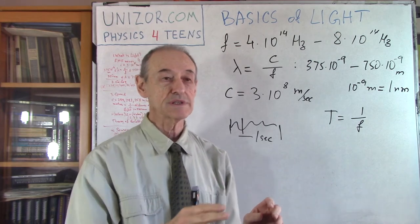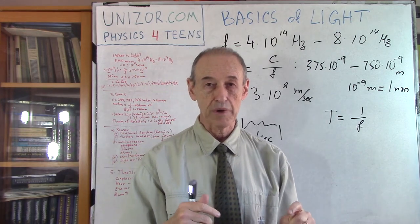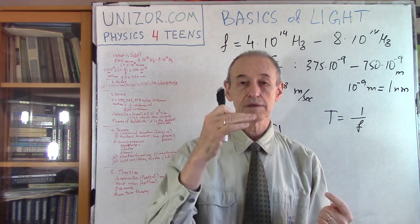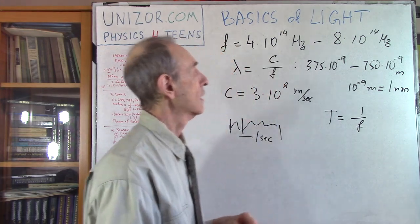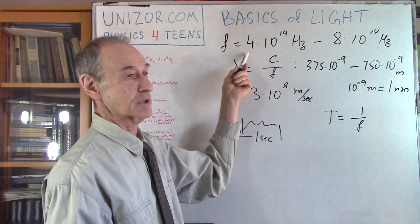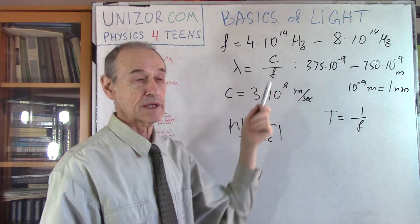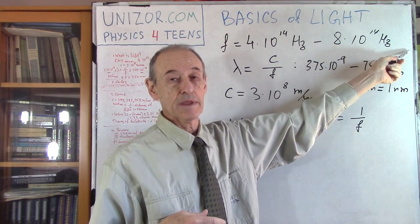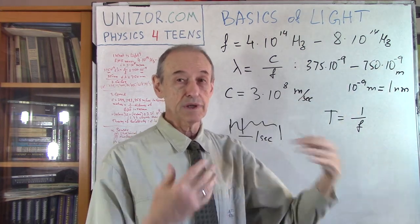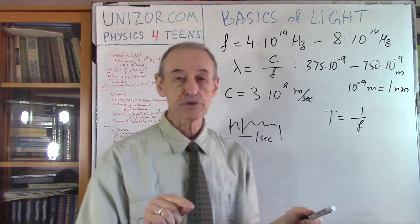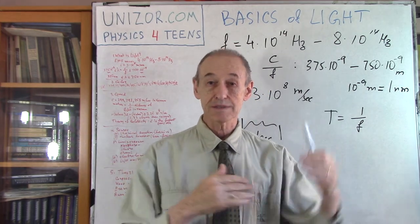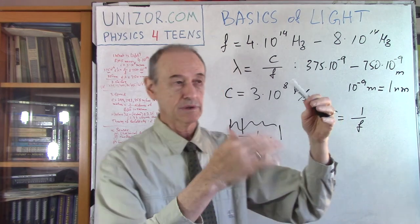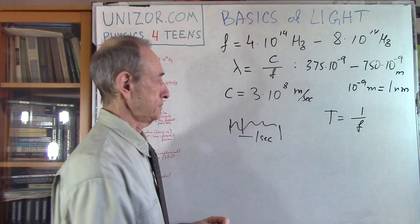You will see from the picture I put in the textual part of this lecture on unizor.com how the color is changing and where we put boundaries between different colors. Everything less frequent than red is called infrared - our eyes basically see it as black. Everything more frequent than violet is called ultraviolet - we also don't see it. That picture has black at the top and bottom, with a gradual change from violet to blue, green, and so on to red in between.